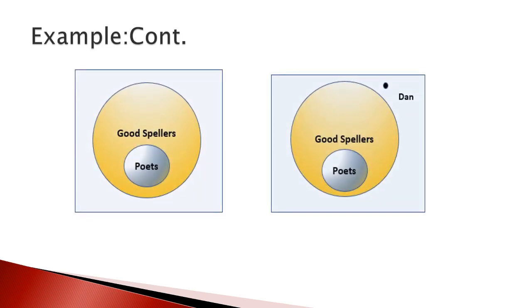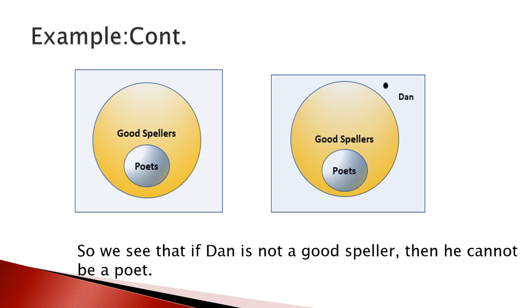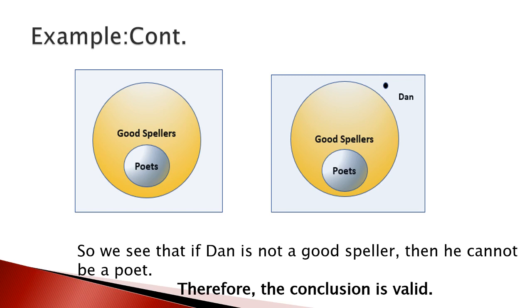Since all poets are good spellers, the set of poets should be inside the set of good spellers. You can see it from the left-hand side picture — the set of all poets is inside the set of good spellers. Since Tan is not a good speller, Tan should be outside the set of good spellers. So if Tan is not a good speller, Tan cannot be a poet. Therefore, the conclusion is valid.